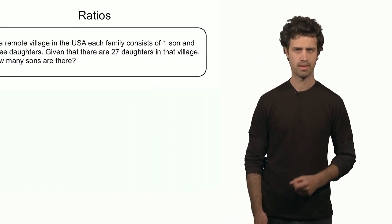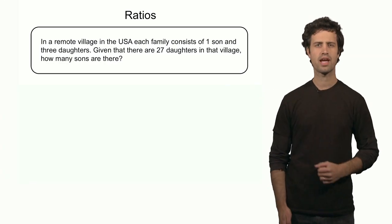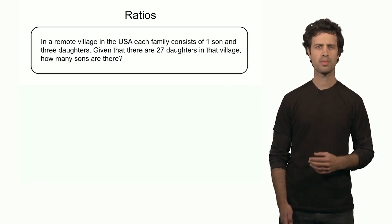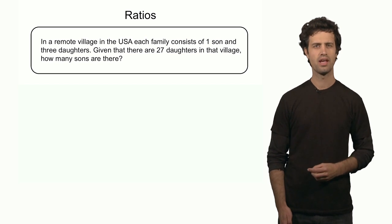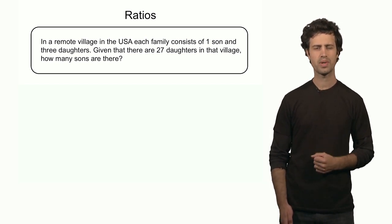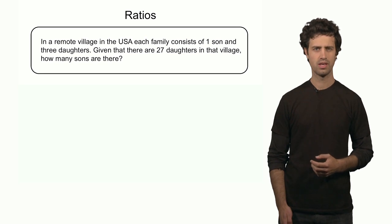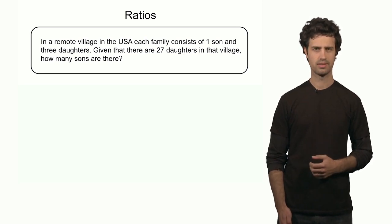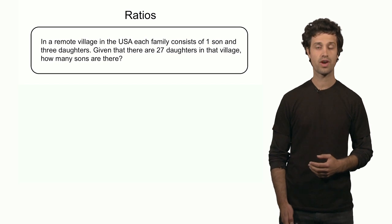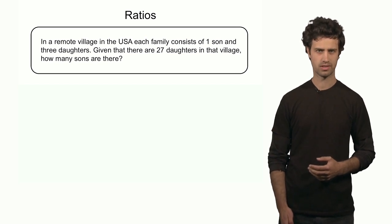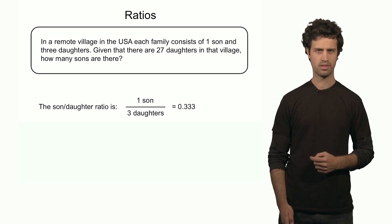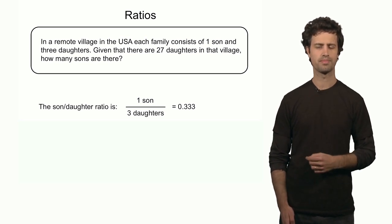Let's look at an example. Let's consider a remote village somewhere in the United States, where each family consists of one son and three daughters. Now given that there are 27 daughters in this small village, how many sons are there? You can calculate this problem by considering the ratio of sons over daughters. There is one son for every three daughters. That means this ratio is 0.333.